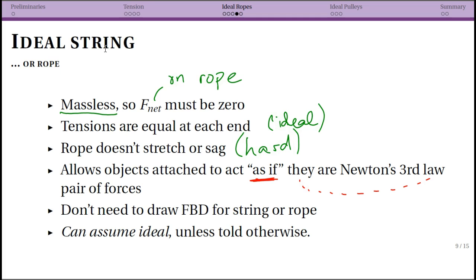So what this means for you, you the happy student, is that you do not need to draw the free body diagram for the string or the rope. Anytime the string or rope is ideal, it basically is just allowing our objects to act as if they are in Newton's third law pairs directly. So don't draw the free body diagram for the string or the rope.